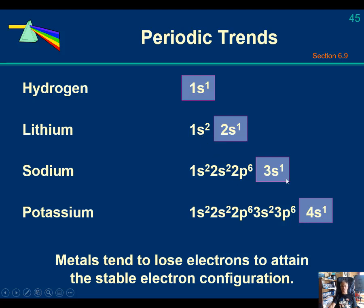And sodium, if it gives its 3s up electron, it now has neon's electron configuration and potassium would have argon's electron configuration if it gave up its 4s1 valence electron. So metals tend to give up electrons to get stable, to attain noble gas electron configuration.